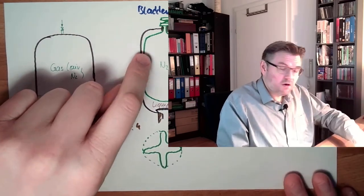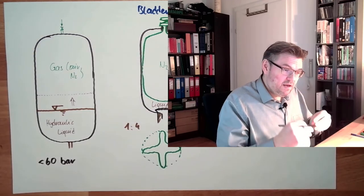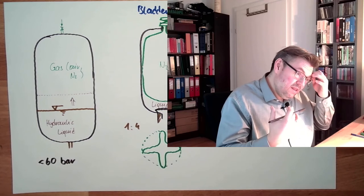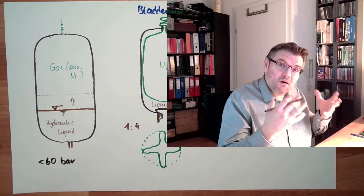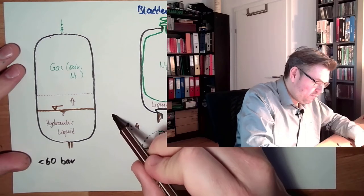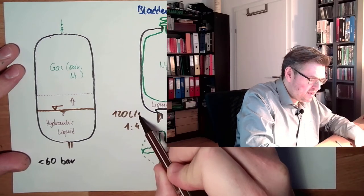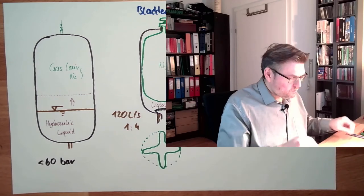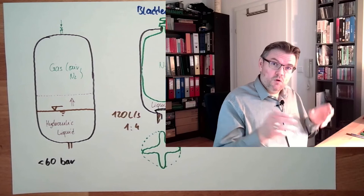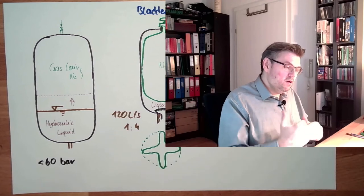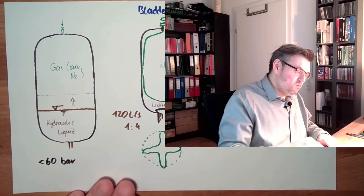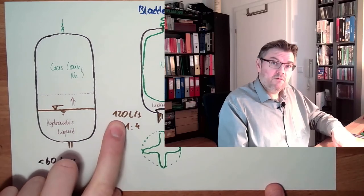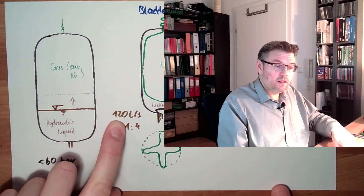However, because it's very elastic, I can really take in or pour out a lot of oil, up to 120 liters per second. The exchange rate of the oil is very high. So these bladder accumulators are usually small accumulators, usually for small pressure differences. However, we can really take a lot of oil in or out.